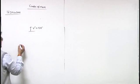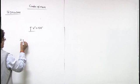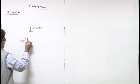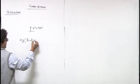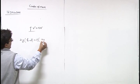So V' equals square root of 2G(H-D), and V equals square root of 2GH.